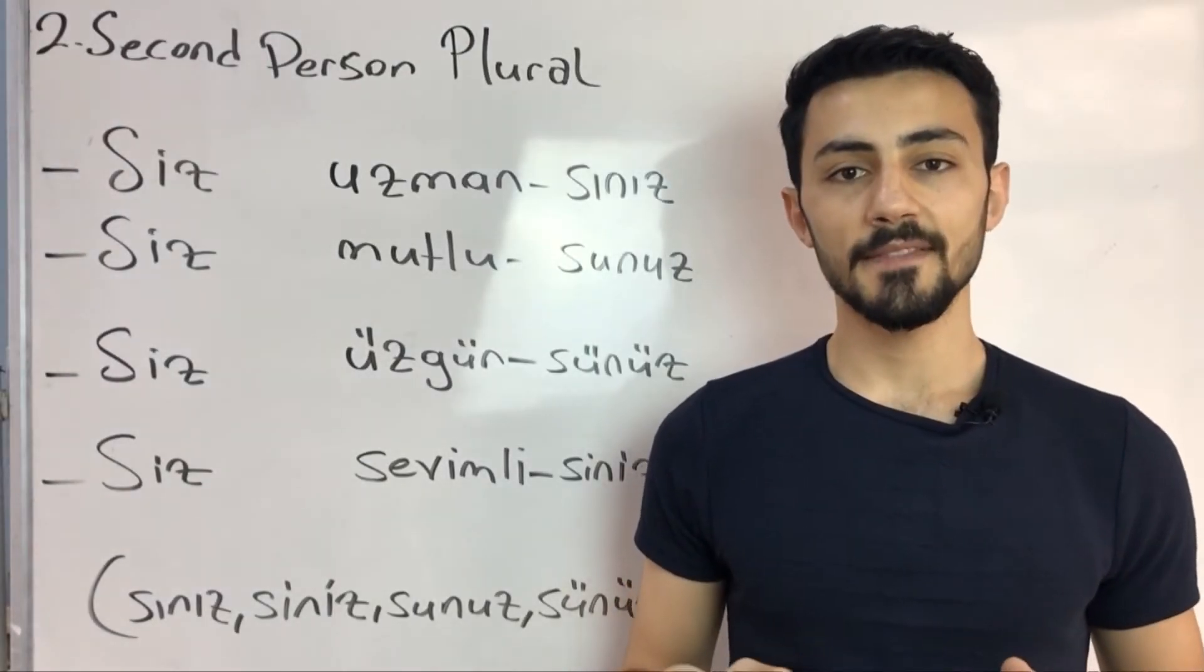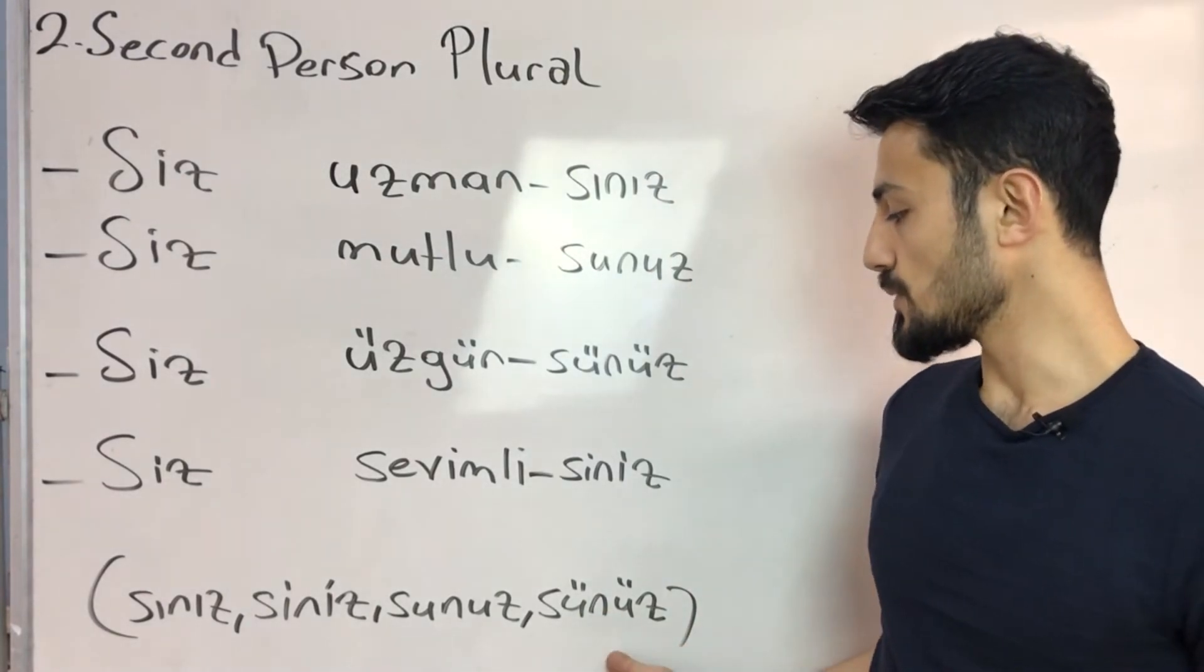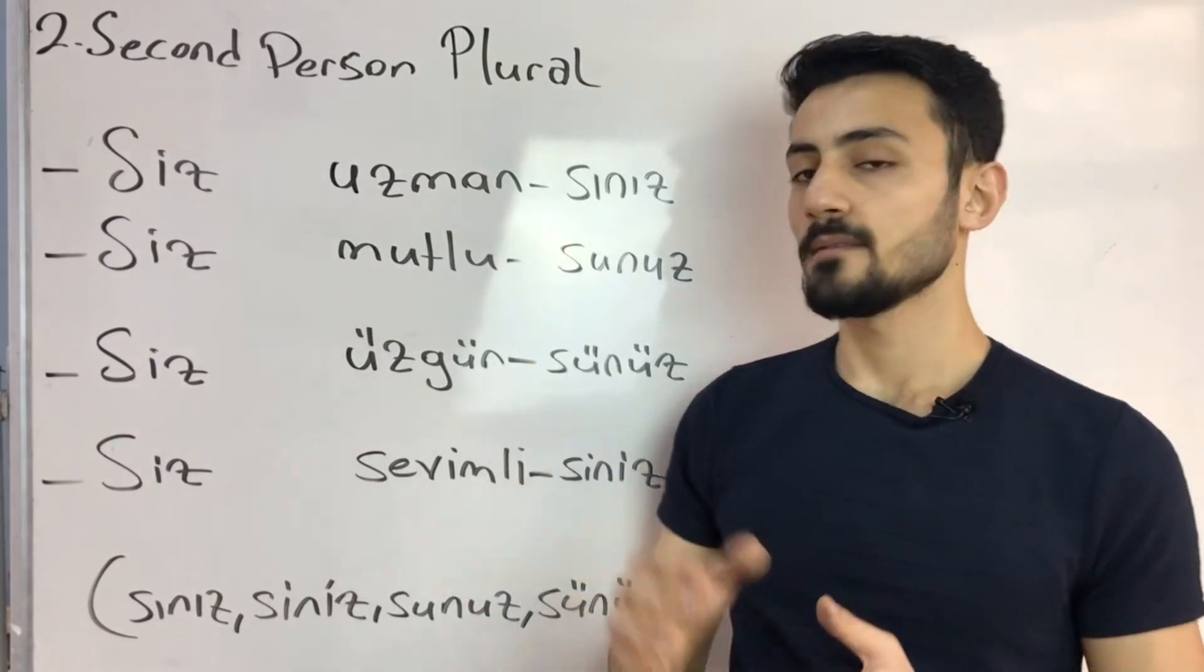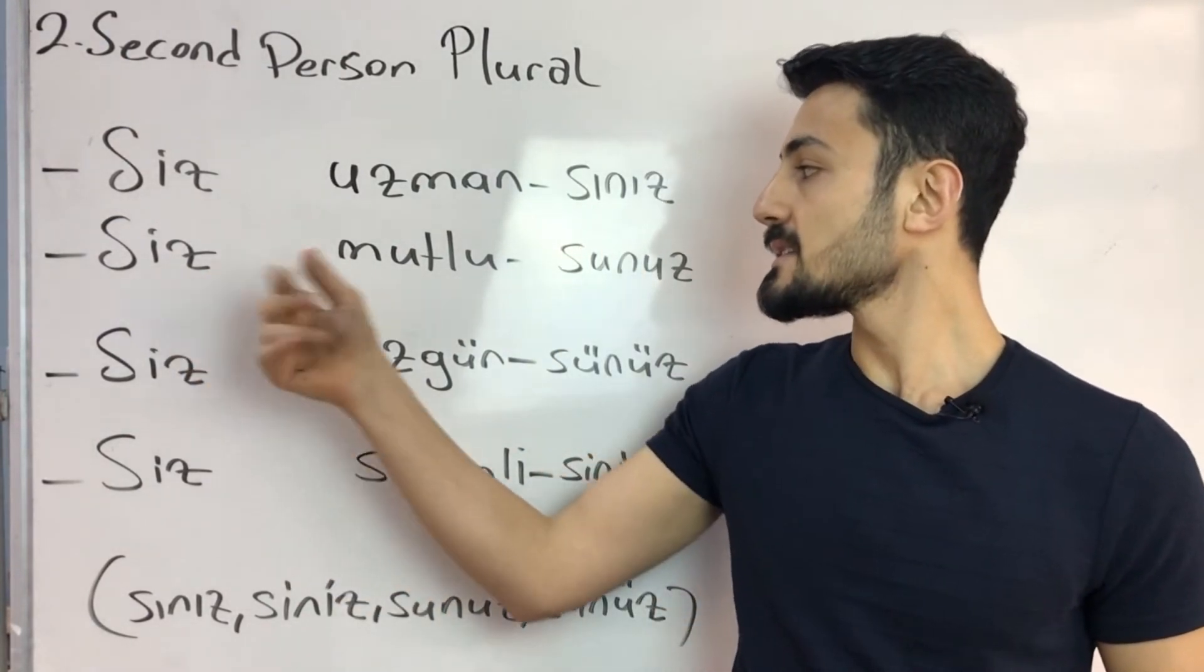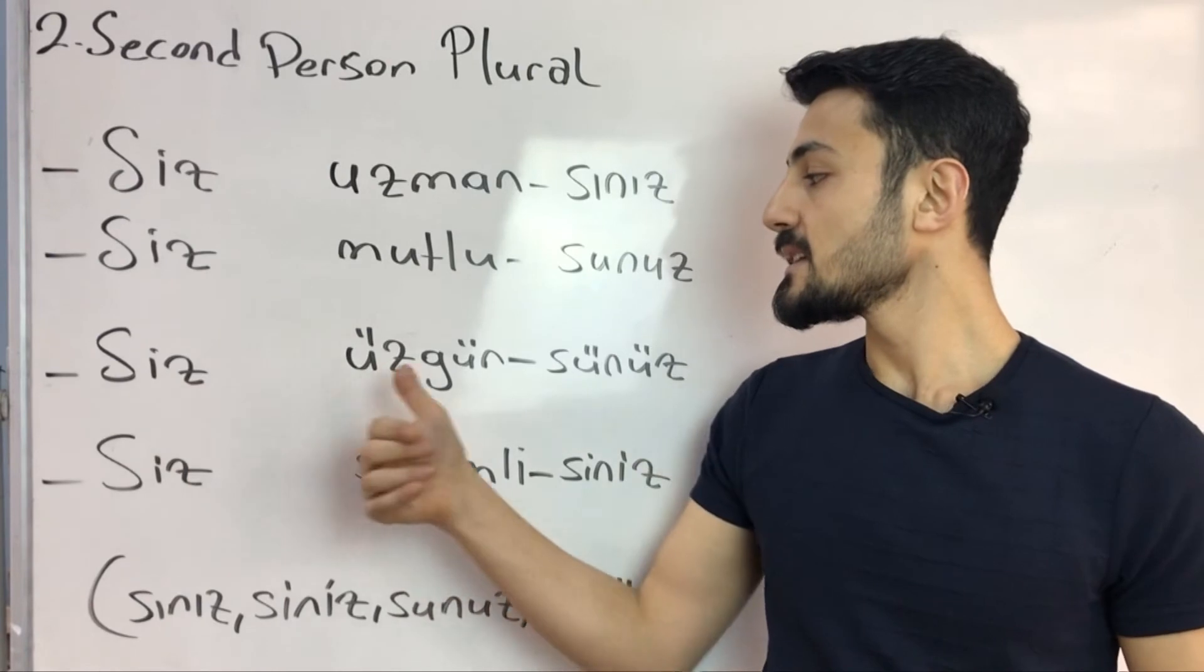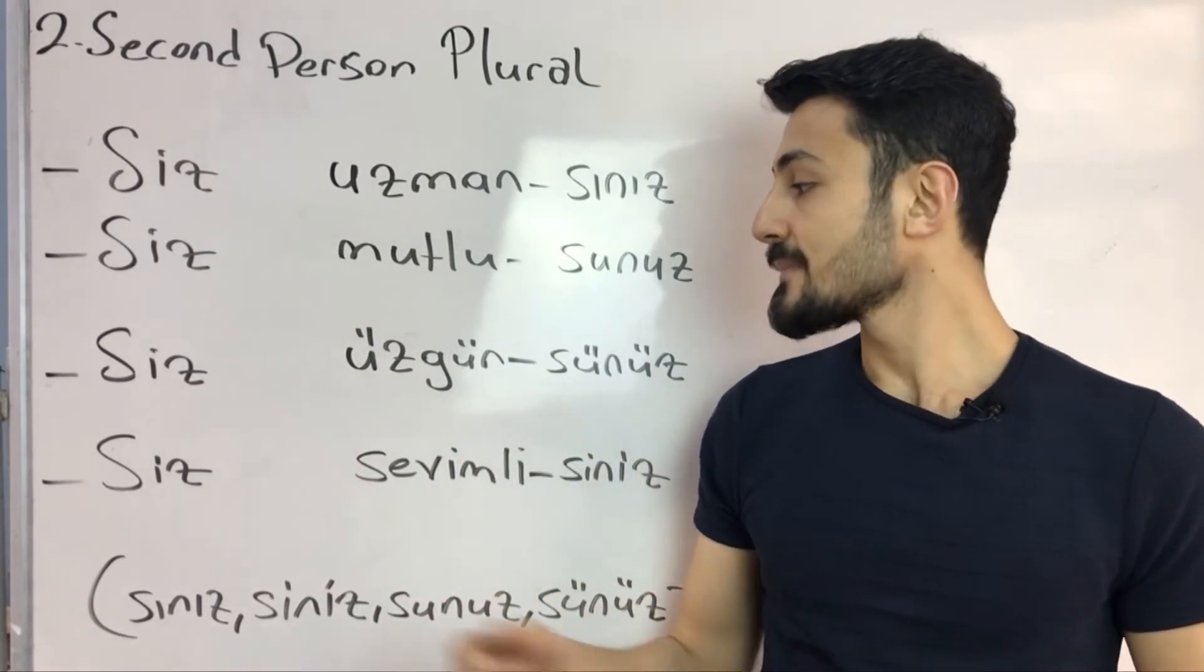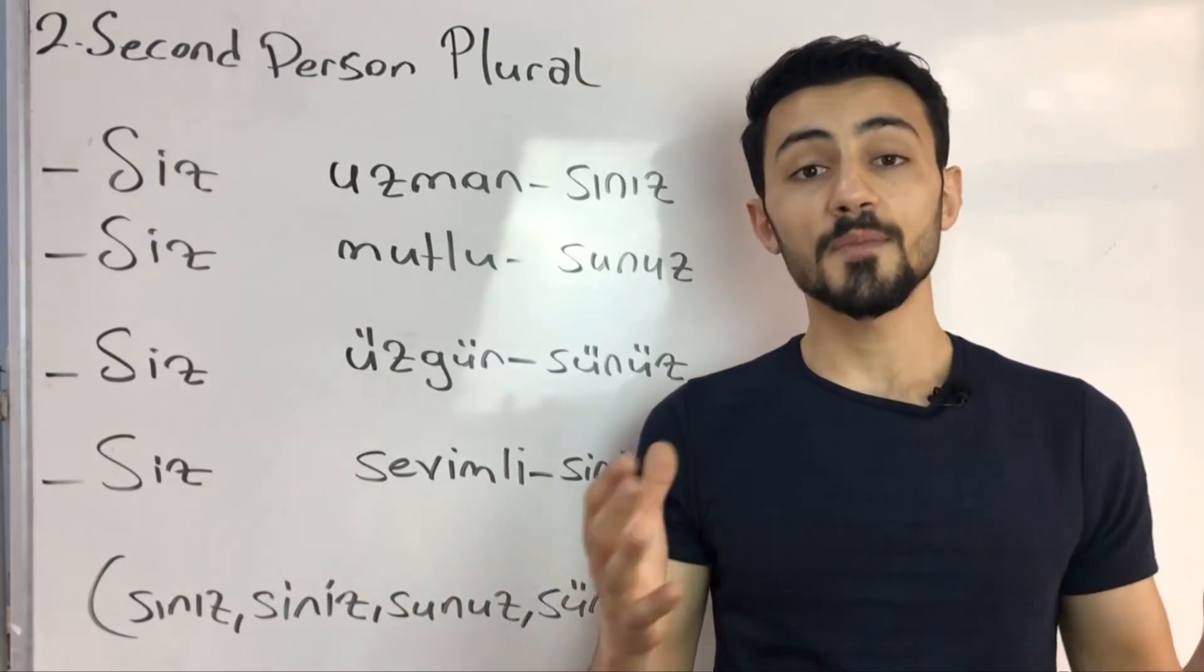Second person plural, the suffixes are sınız, siniz, sunuz, sünüz. Siz uzmansınız - You are expert. Siz mutlusunuz - You are happy. Siz üzgünsünüz - You are upset. Siz sevimlisiniz - You are pretty.